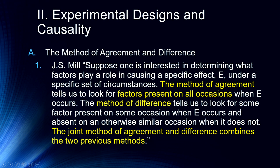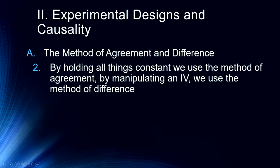The method of agreement says that if something is causing an effect, it has to be present all of the time. The method of difference tells us to look for some factor that is present on some occasion when an effect occurs, and absent on an otherwise similar occasion when it does not. The joint method of agreement and difference combines these two methods, and this is what we do in experiments. By holding all things constant, we use the method of agreement; by manipulating an independent variable, we use the method of difference.